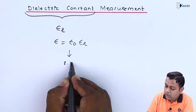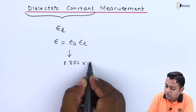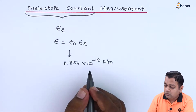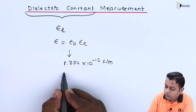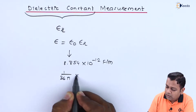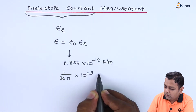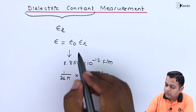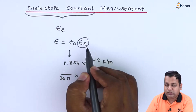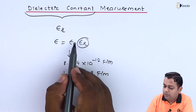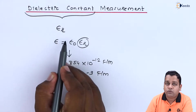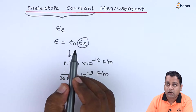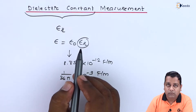Epsilon_0 is the permittivity of free space or air medium, equal to 8.854 × 10⁻¹² farads per meter, also expressed as 1/(36π × 10⁹) farads per meter. Since epsilon_R is a constant value, multiplying by it gives the relative value, and therefore the complete permittivity for the given material medium can be determined.